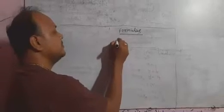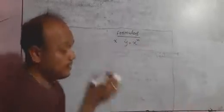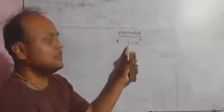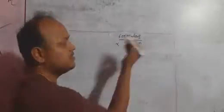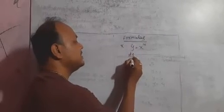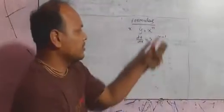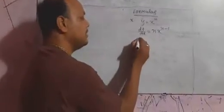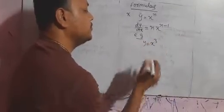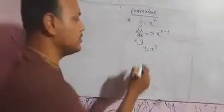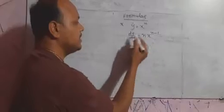Let's practice some formulas based on differentiation. The first formula of derivative: if y equal to x to the power of n, where x is the independent variable, y is the dependent variable, and n is a constant — 1, 2, 3, minus 4, one half, one third, anything — then the formula says the derivative of y with respect to x is n times x to the power of n minus 1. For example, if y equal to x to the power of 3, then using the formula, dy by dx equals 3 times x to the power of 2.